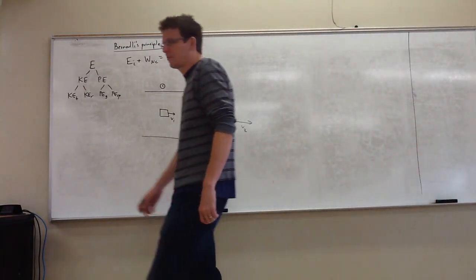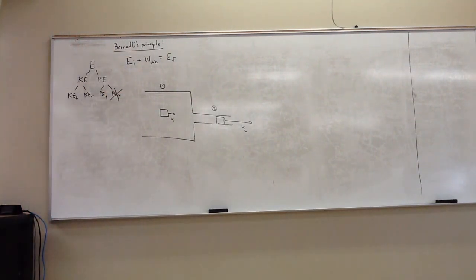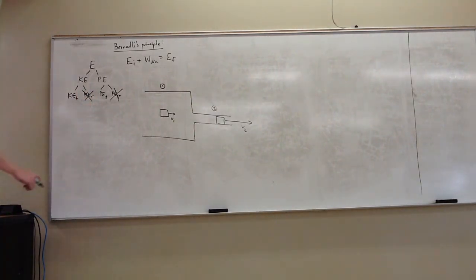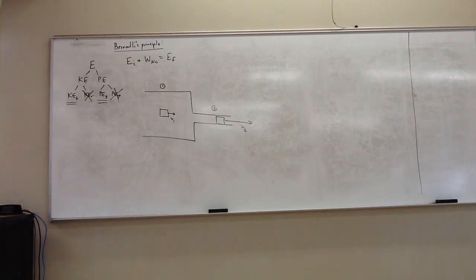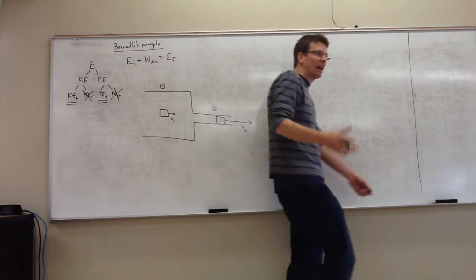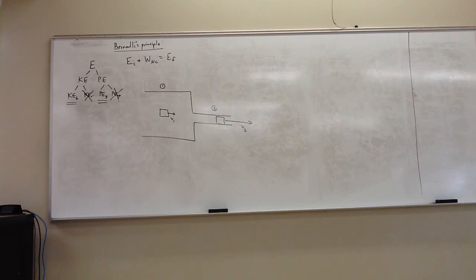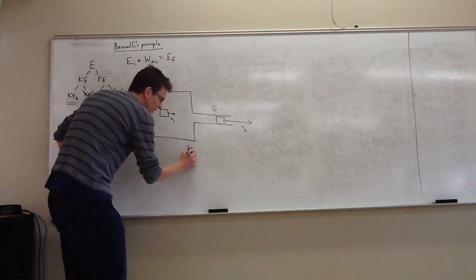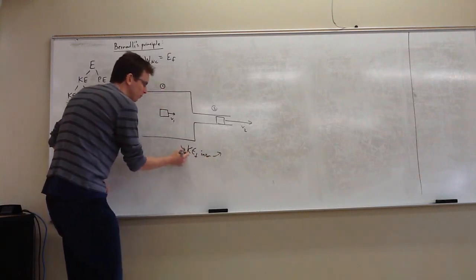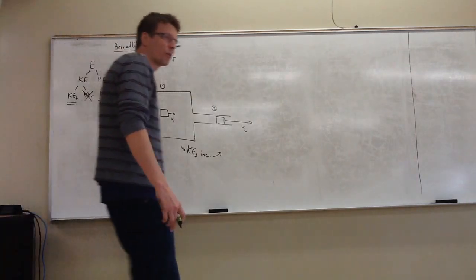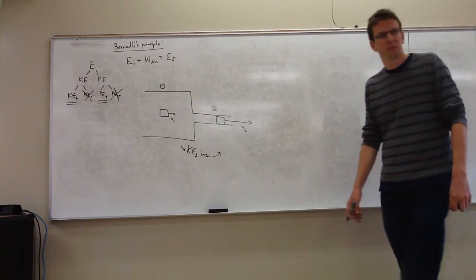Let's try to take a look at this with energy. There's no spring in sight, so we drop that term, and we're not going to let our water rotate, so forget that term too. We just have translational kinetic energy and gravitational potential energy. My pipe is horizontal, and yet my fluid is speeding up anyway — so its kinetic energy is clearly increasing. It's not getting that energy because it's falling down. So how is that water going faster? What's giving it more energy? Pressure.